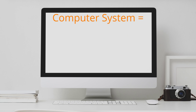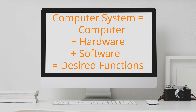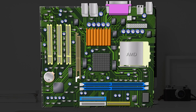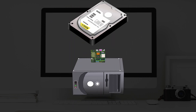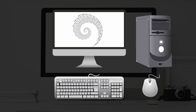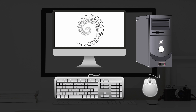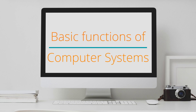A computer system is a computer combined with other hardware and software needed to perform desired functions. In other words, a computer system is a computer and everything that's needed for a computer to work, just like Mr. Accountant needs his office to work. To understand this better, let's understand the basic functions of a computer system.